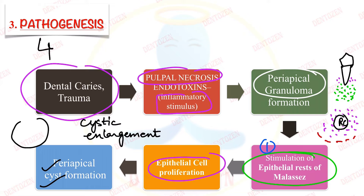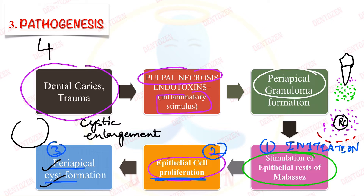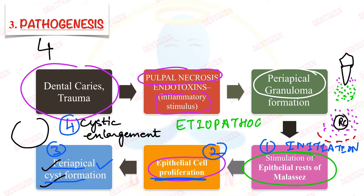The pathogenesis of radicular cysts can be described in four phases: the first phase is the phase of initiation, in which there is stimulation of cell rests of Malassez; the second phase is the phase of proliferation, when these cells are proliferating; the third phase is the phase of periapical cyst formation, where the central cells die and a cavity forms; and the fourth phase is the phase of cystic enlargement.